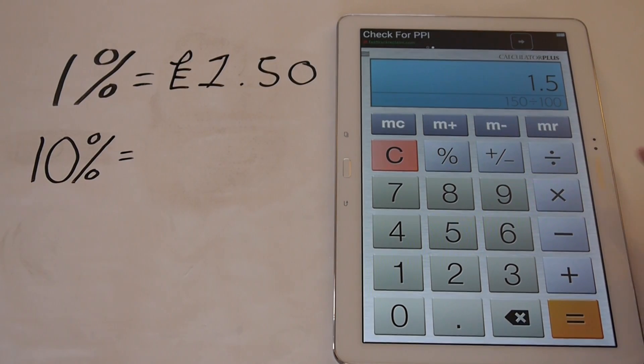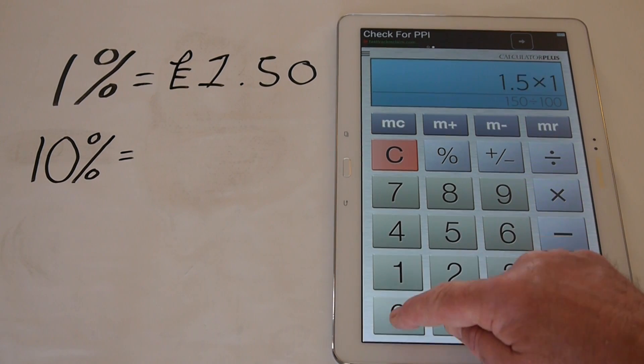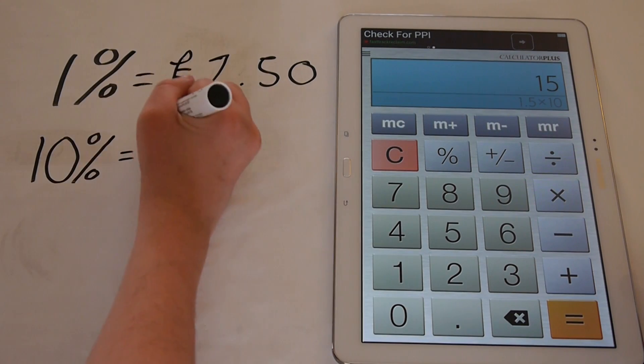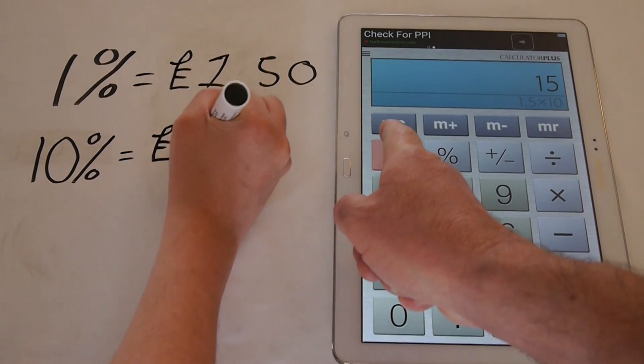But we want to find 10%, so we multiply using the times button, multiply the x. So times that by the 10, and that is equal to 15. So 10% of 150 is equal to 15 pounds.